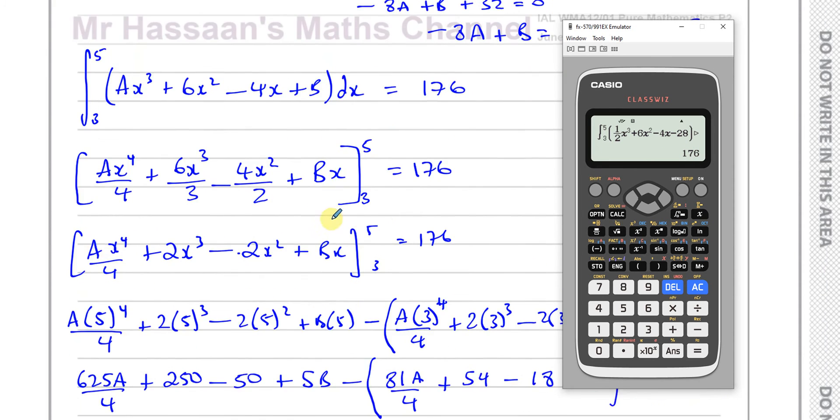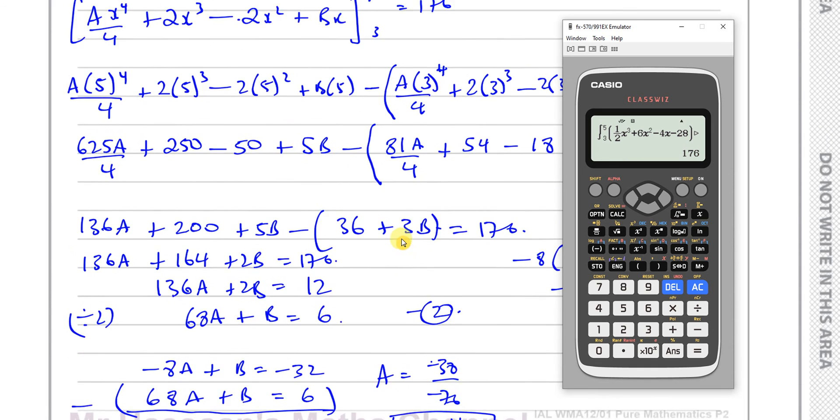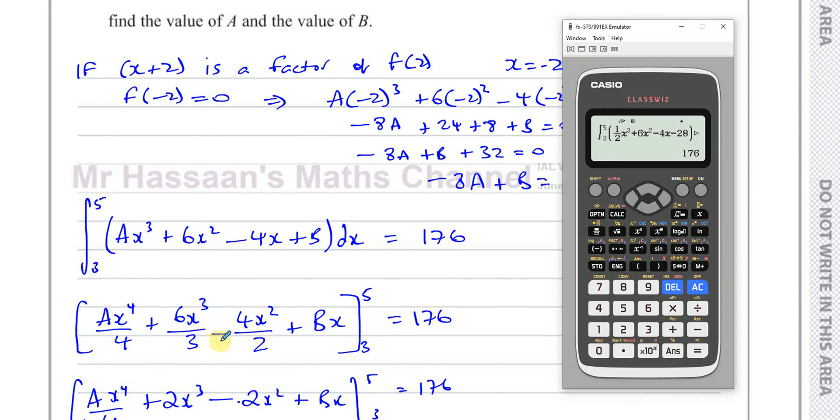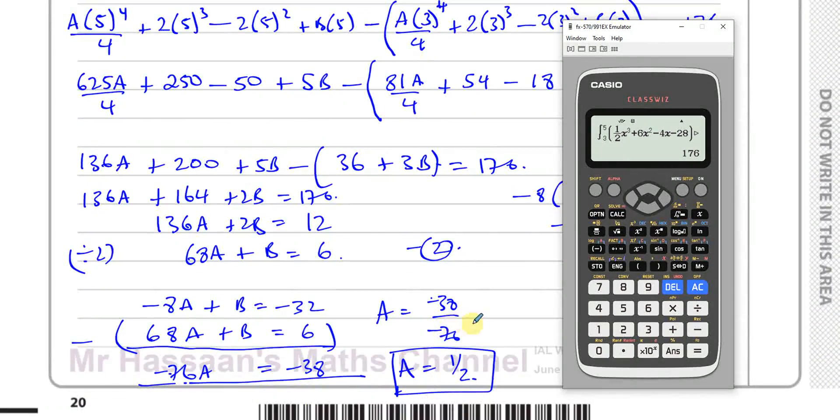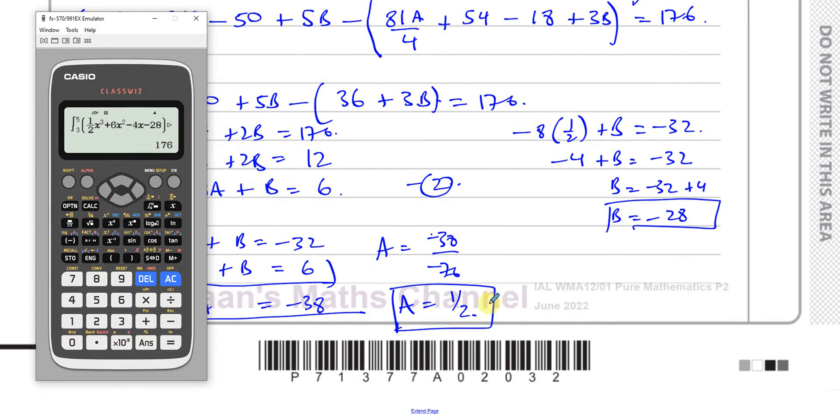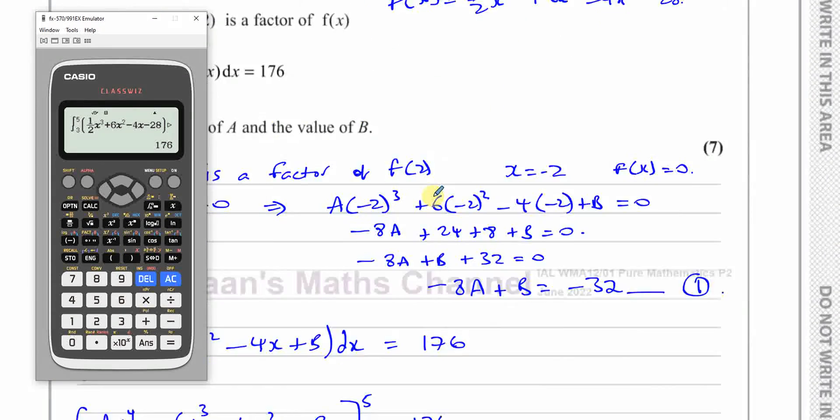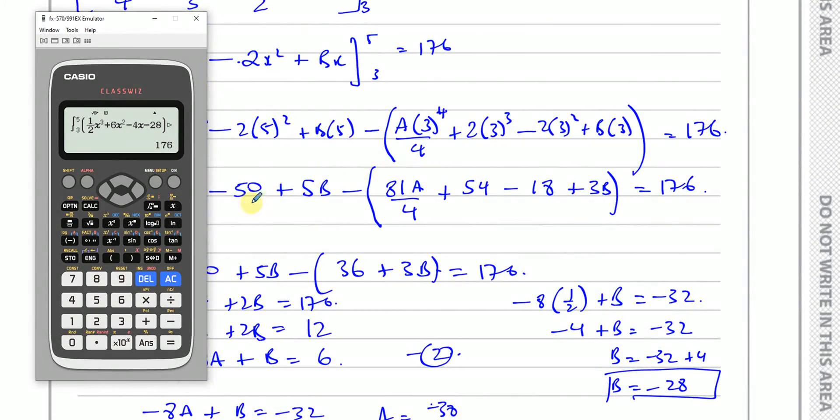Now if it didn't come out as 176, for example we made a mistake somewhere, it would have come out as a different fraction, a different number, and therefore our answer wouldn't come out as 176 when you put those values in. Then you can check back for mistakes that you might have made. This is a very efficient way and a good way for you to check your answer, especially if you've got the time to do so in the exam, to make sure that you have not made any silly mistakes. And if you have, then you can go back and try to figure out where that mistake is and correct it.